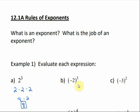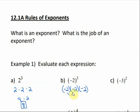For B, we have negative 2 raised to the third power. So our base is negative 2, which means we're going to multiply negative 2 times itself 3 times. If I multiply negative 2 times negative 2, a negative times a negative is positive 4, then positive 4 times negative 2, which would give me negative 8.